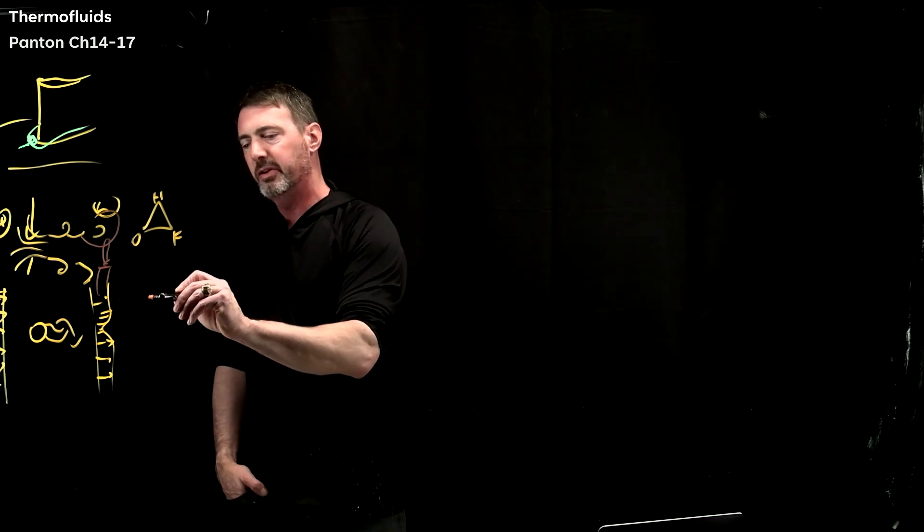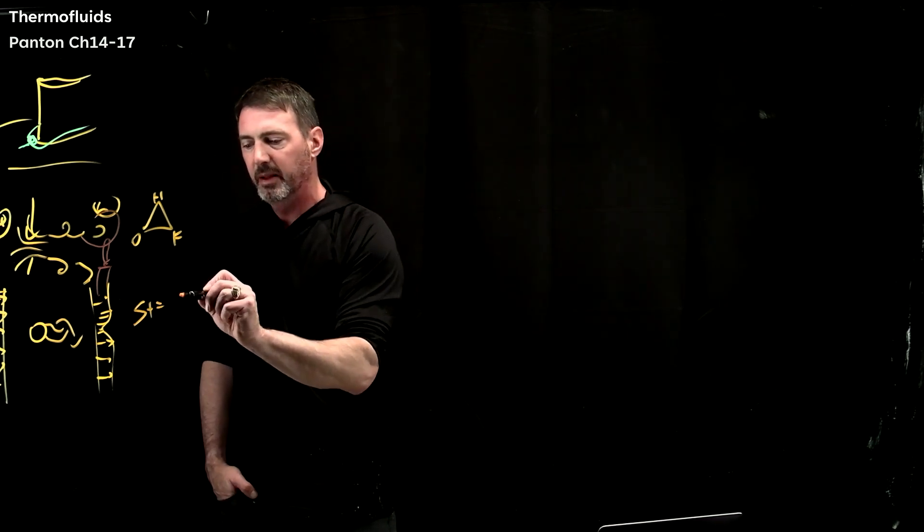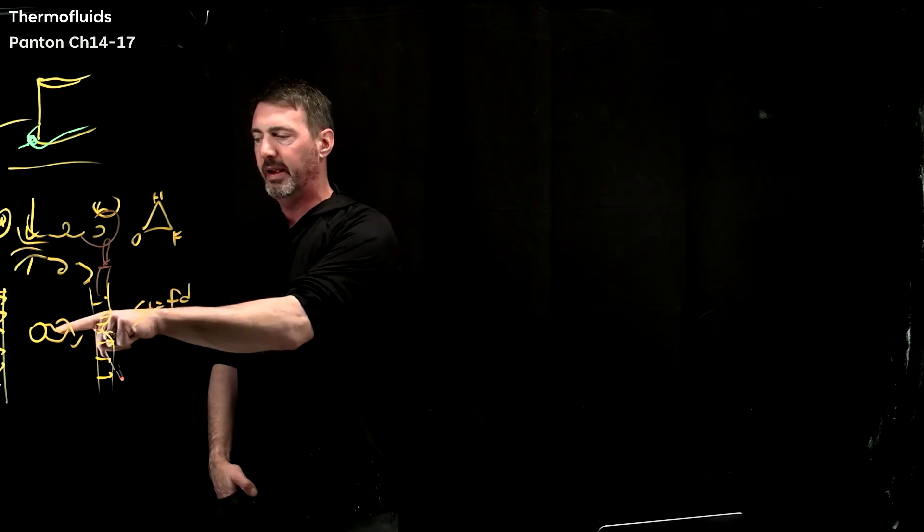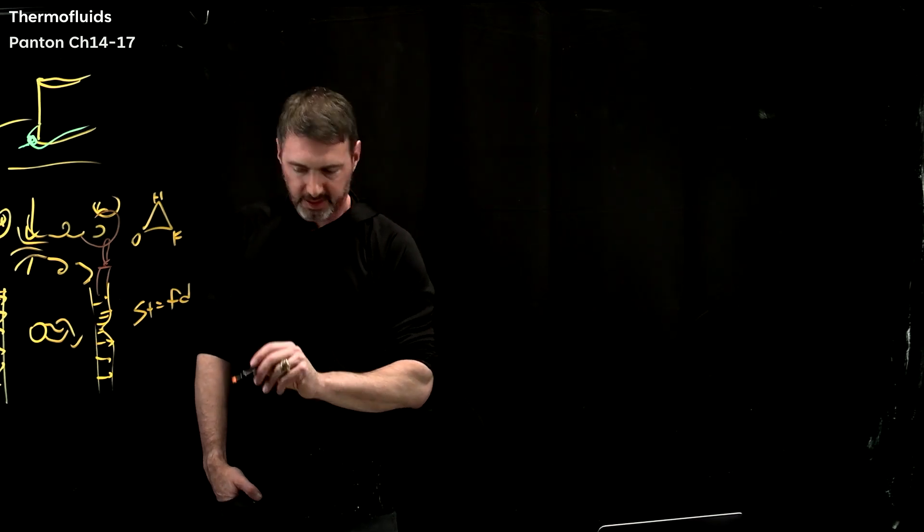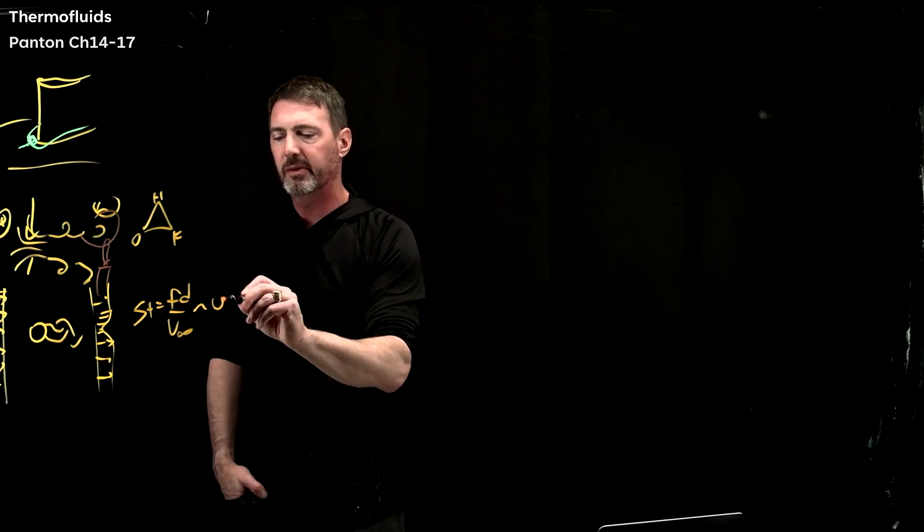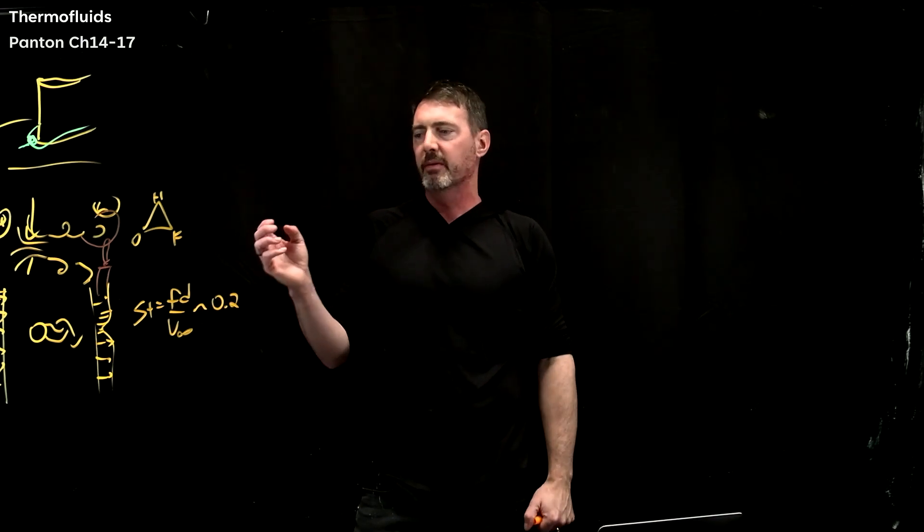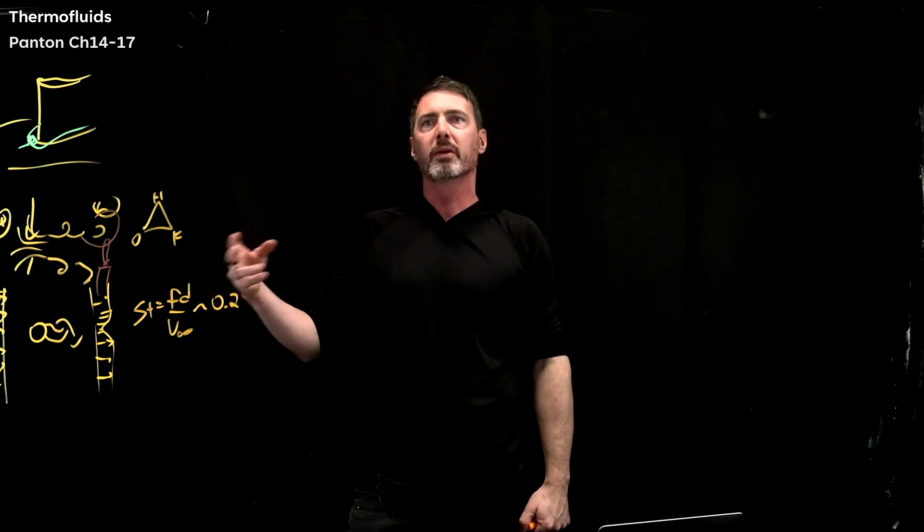But the thing you get with sort of vortex rolling off of here is there is a dominant frequency. And that non-dimensional number is actually called the Strouhal number. And that would be the frequency times d is the diameter of the cylinder, divided by u infinity. And basically, this is 0.2 for almost all speeds.